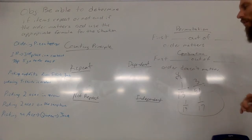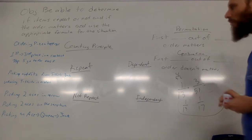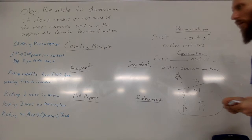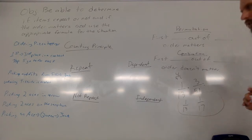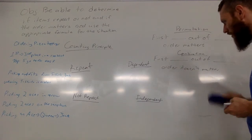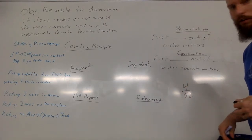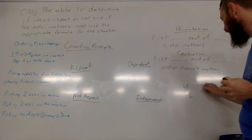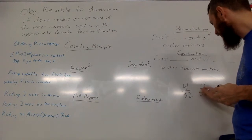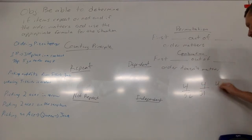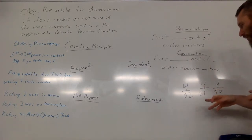Let's do a few more. What would be the probability of getting an ace, then a queen, then a jack? The ace is 4 out of 52. If you don't put it back, then to get a queen there are 4 queens left out of 51 remaining cards. Then to get a jack, there are 4 jacks left out of 50 cards. You multiply those out to get the probability of drawing an ace, then a queen, then a jack.